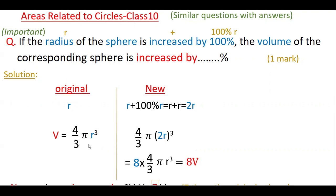The original volume of the sphere is 4/3 π r³. Now for the new volume, r plus 100% r equals r plus 100/100 times r, which is r plus r, that is equal to 2r. So the new volume is 4/3 π (2r)³, which equals 4/3 π r³ times 2³. Since 2 cubed is 8, the new volume is 8 times the original volume.